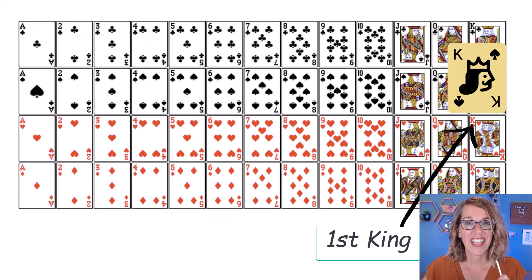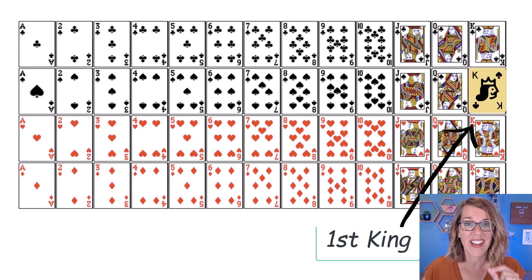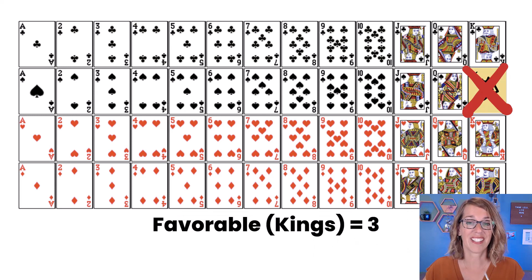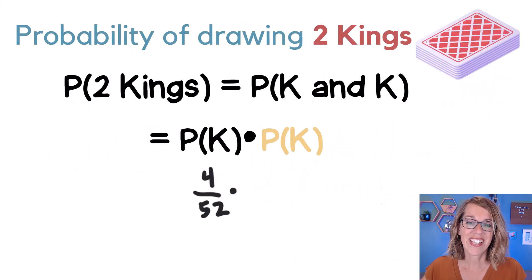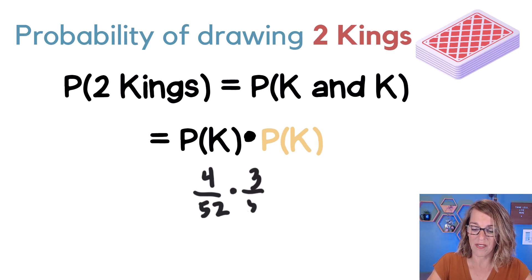Now with that second king, I've already drawn one king - for the theoretical we assume that we've drawn what we wanted. But I'm not going to put that first king back. That means that we've got three kings left. So three favorable outcomes. And for the remaining cards, we've got 51 cards left. So that next probability that I'm multiplying is going to be 3 out of 51.